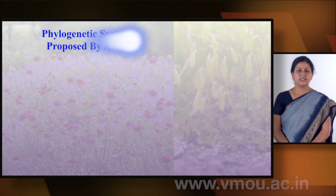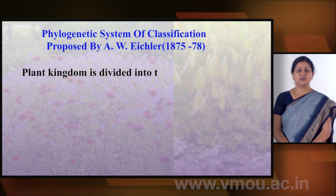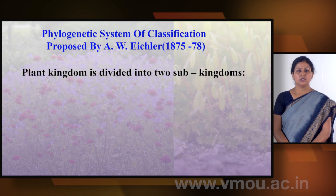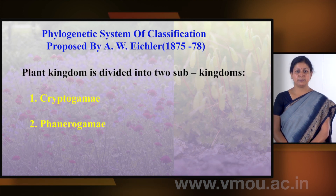The third classification system is called the phylogenetic system, given by Engler and Prantl. This system is based on evolutionary and genetic relationships. The plant kingdom has been divided into two sub-kingdoms: Cryptogamy and Phanerogamy.